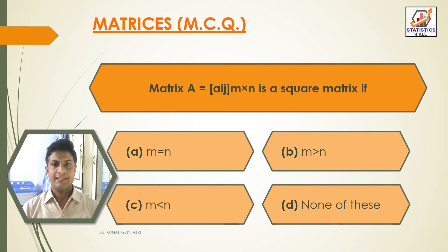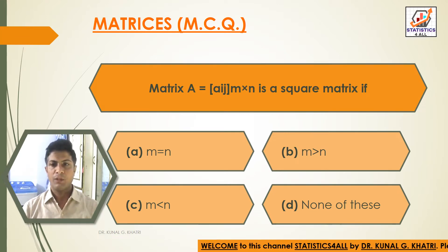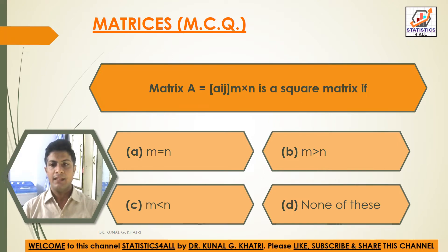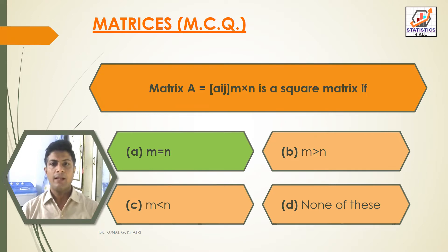First question: matrix A, that is A(i,j), an M×N matrix, is a square matrix if — option A: M is equal to N; option B: M is greater than N; option C: M is less than N; option D: none of these. The answer is option A, that is M is equal to N. A matrix A(i,j) of M×N is a square matrix.